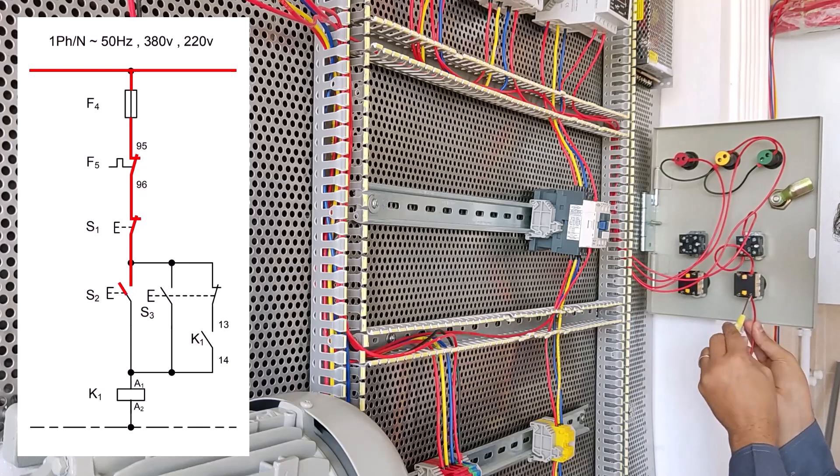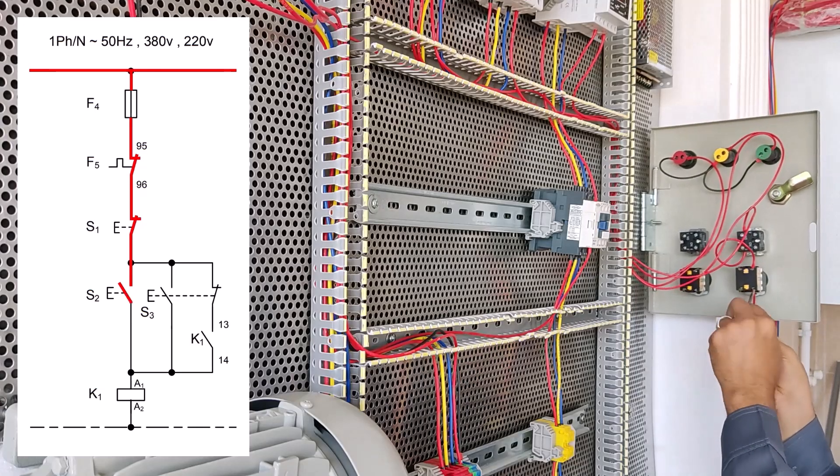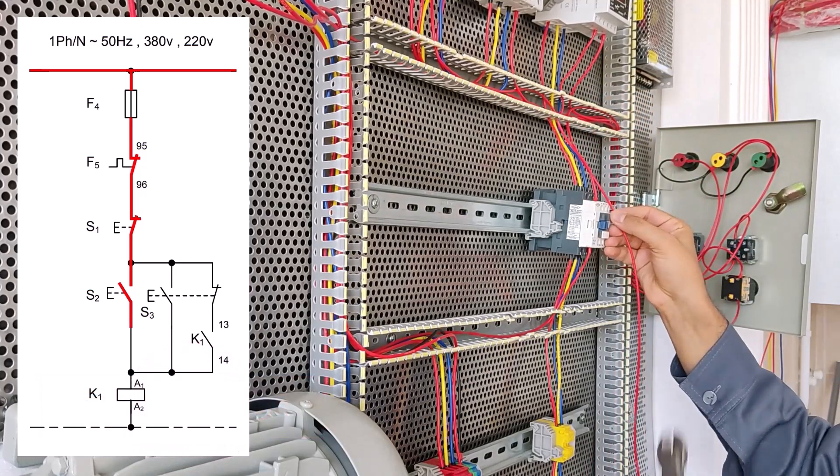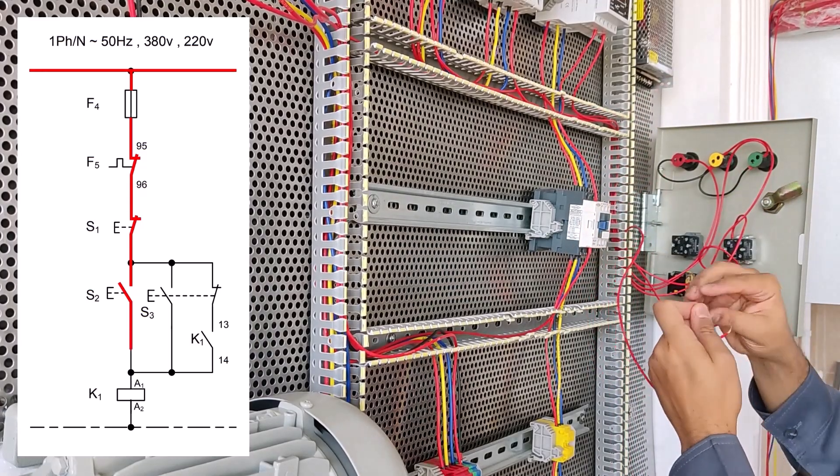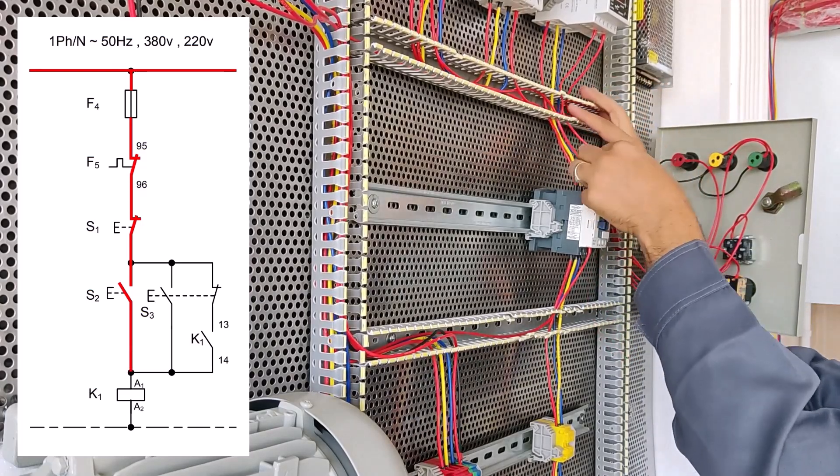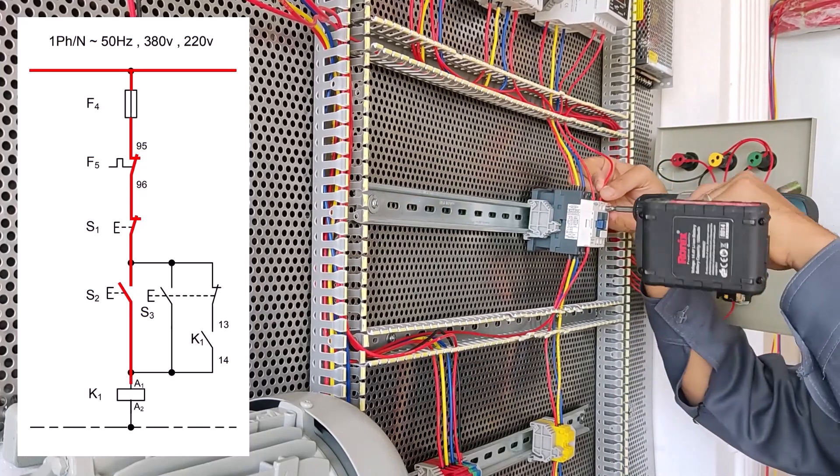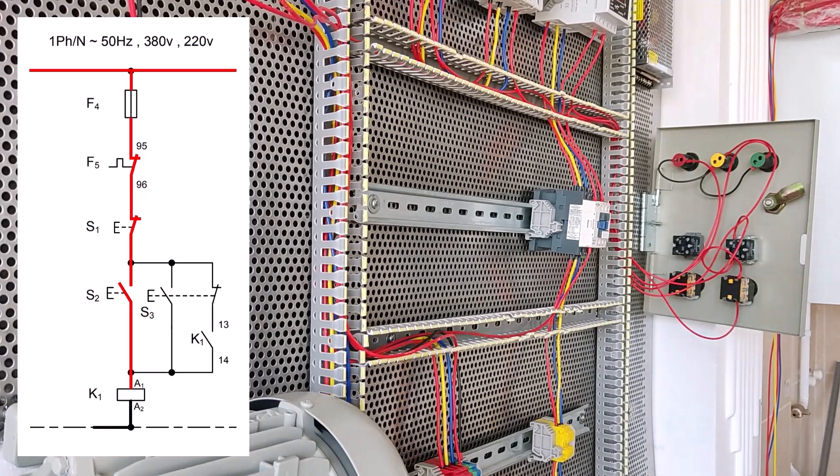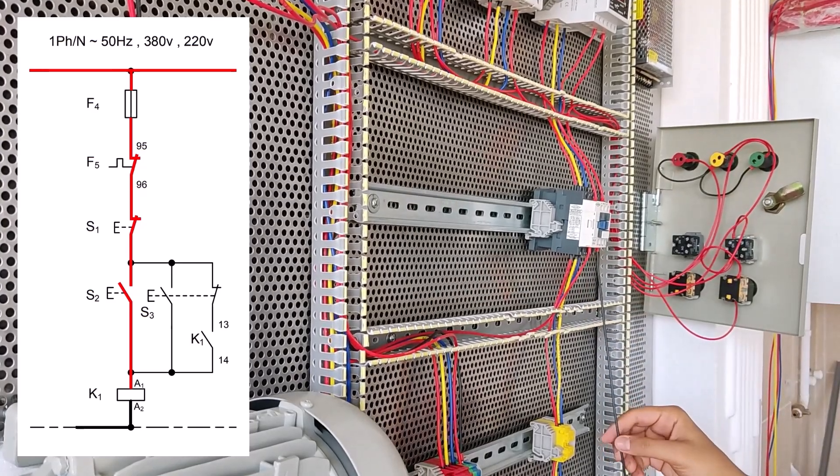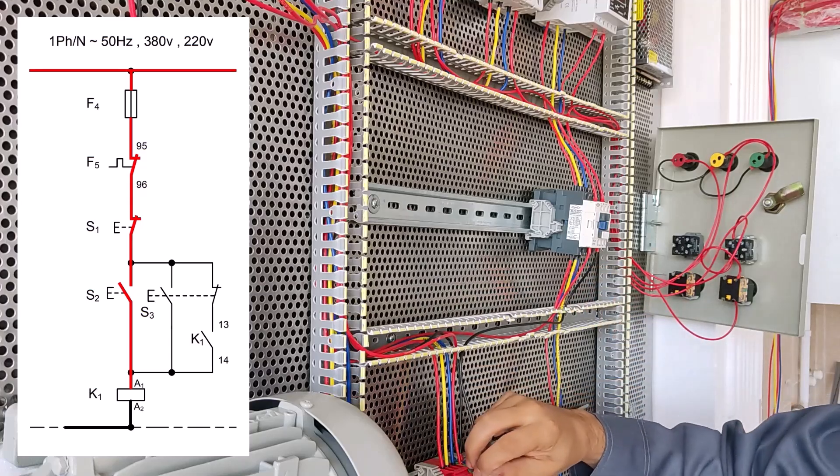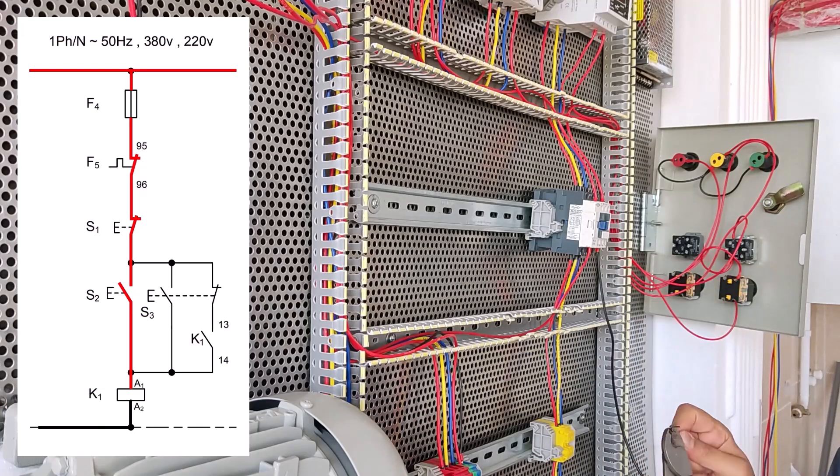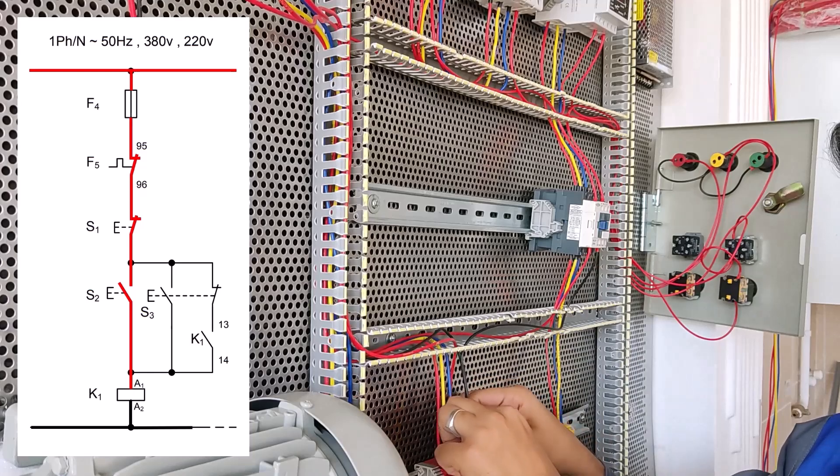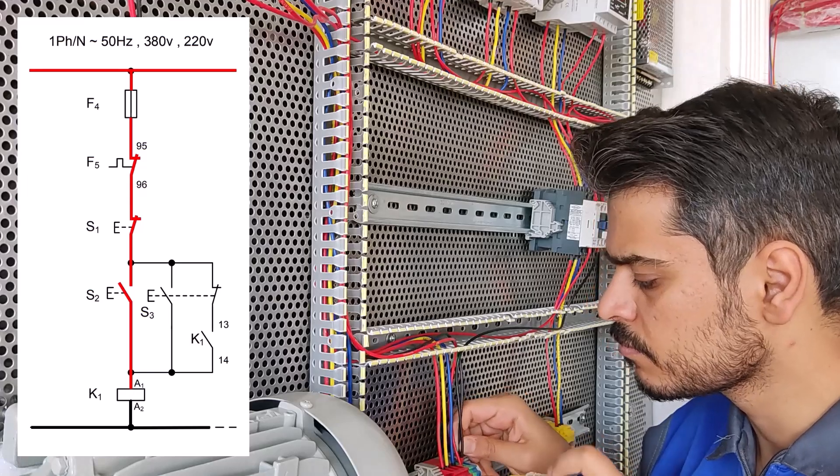Now we connect a wire from 14 starter S2 to A1 conductor K1. Now we connect 13 and 14 starter S2 to A1 conductor K1, 13 and 14 star S3. But first you can connect the A2 to A1 control. As you can see this is the black wire.